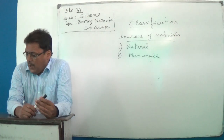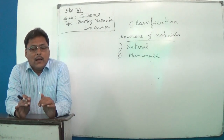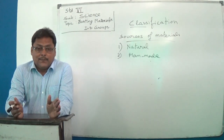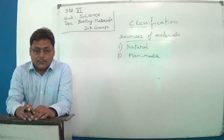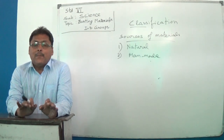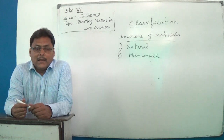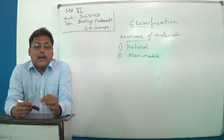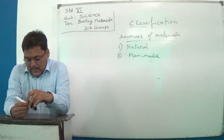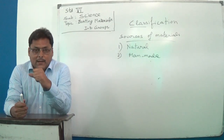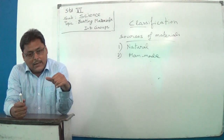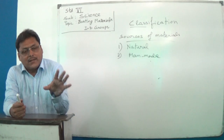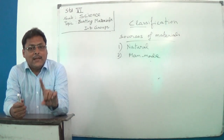One thing must be clear: many things can be made up of the same material, and also the same thing can be made up of different materials. For example, wood is a material — the material is the same, but we can make a table, a desk, or a chair from that same material. Different things, but the same material.